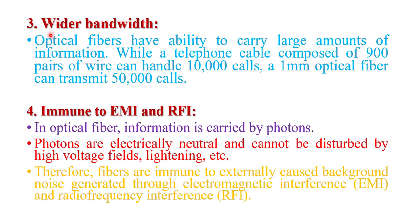The third advantage of optical fiber is wider bandwidth. Optical fiber has the ability to carry a large amount of information. While a telephone cable composed of 900 pairs of wire can handle 10,000 calls, a 1 mm optical fiber can transmit 50,000 calls. So optical fiber cable has wider bandwidth as compared to old telephone cable.